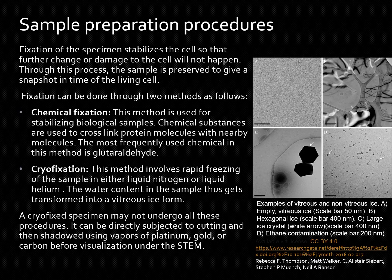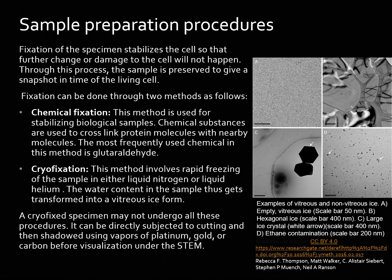Cryo-fixation involves rapid freezing of the sample in either liquid nitrogen or liquid helium. The water content in the sample gets transformed into a vitreous ice form. It is not necessary for a cryo-fixed specimen to undergo all procedures; it can be directly subjected to cutting and then shadowed using vapours of platinum or gold, or even carbon, before visualisation under the STEM.